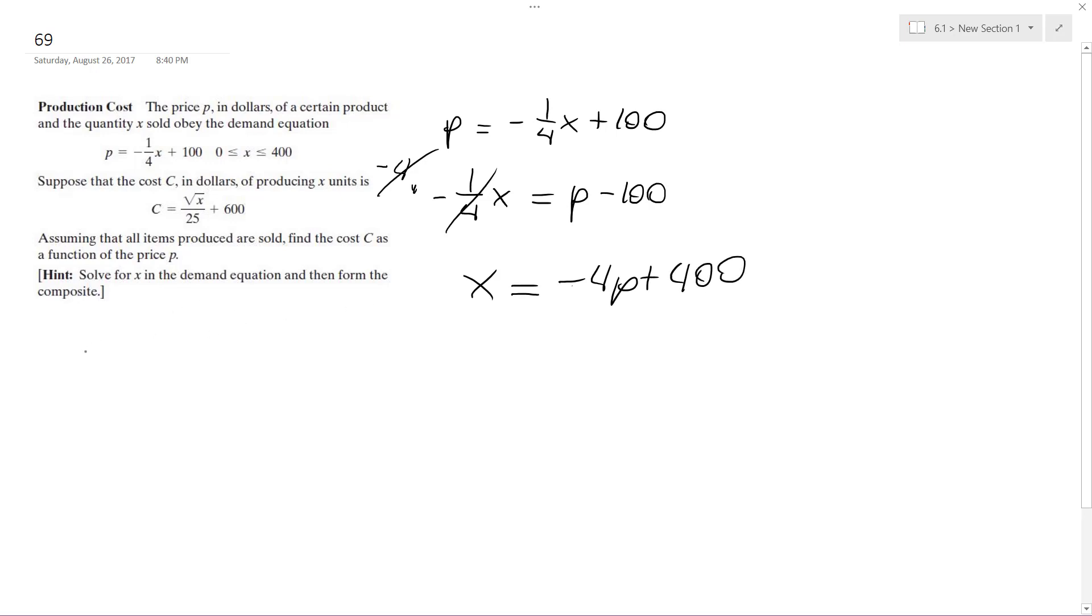So this is our x-value. c(p) is going to equal the square root of (-4p + 400) over 25 plus 600.